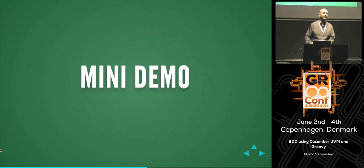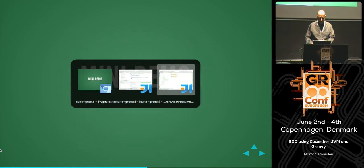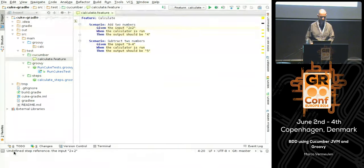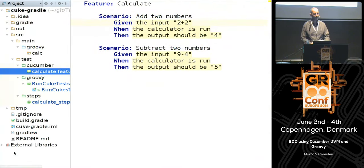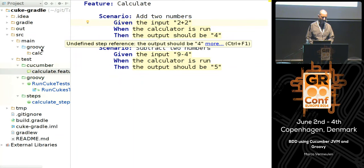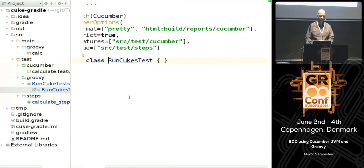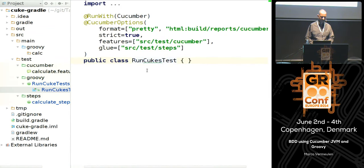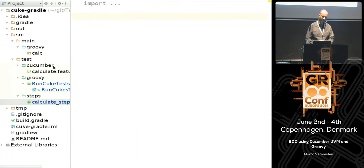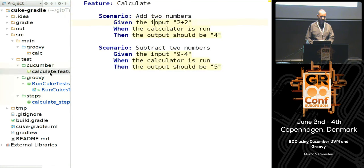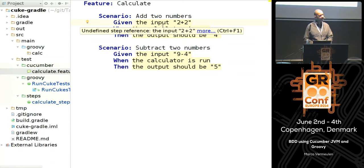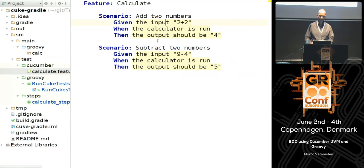I'm going to do a tiny demo showing the flow of writing that calculator example. There we go — that's the feature file. You'll see our project structure with all those artifacts we spoke about — our empty test runner and an empty step definitions file already waiting. All we're going to do now is implement this bit of functionality, and you'll see how easy it is and how similar it is to normal test-driven development.